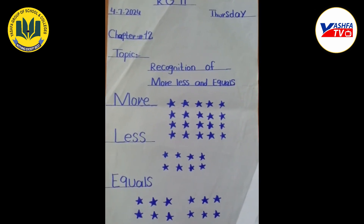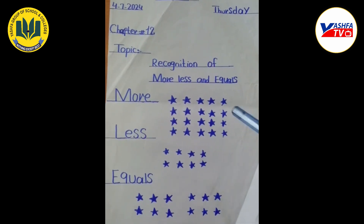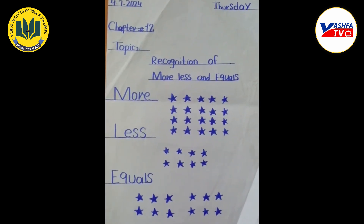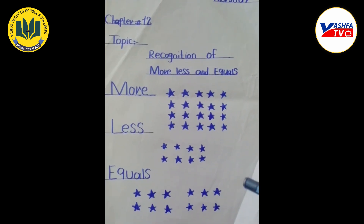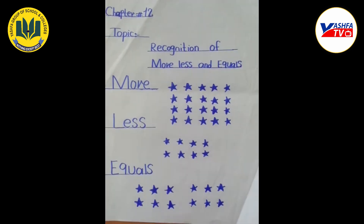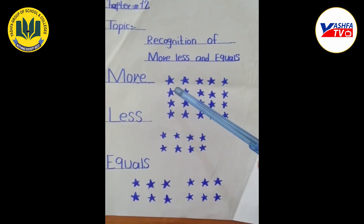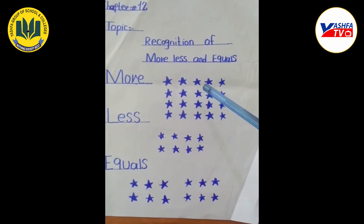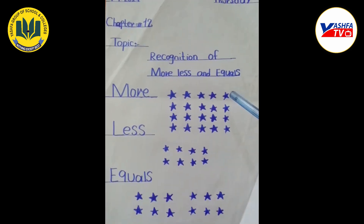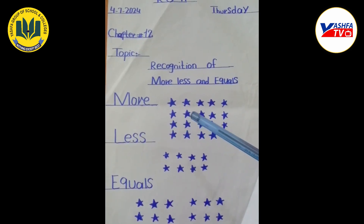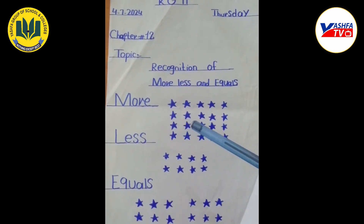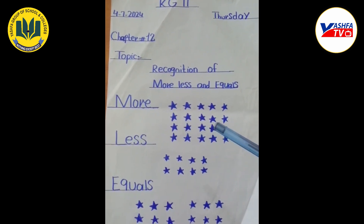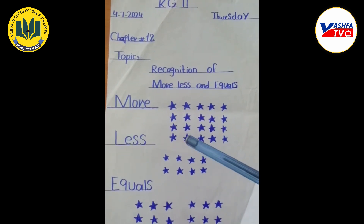KG2 class، میں نے آپ کے سامنے بہت سے stars بنائی ہیں۔ اب ہم count کرتے ہیں کہ کون سے stars more ہوں گے، کون سے less، اور کون سے equal۔ تو پہلے stars count کرتے ہیں: 1, 2, 3, 4, 5, 6, 7, 8, 9, 10, 11, 12, 13, 14, 15, 16, 17, 18, 19, 20۔